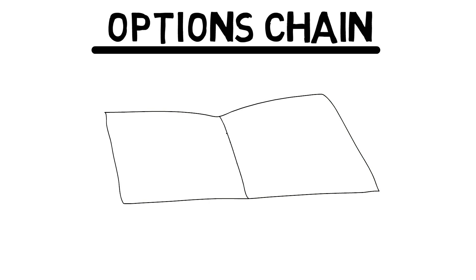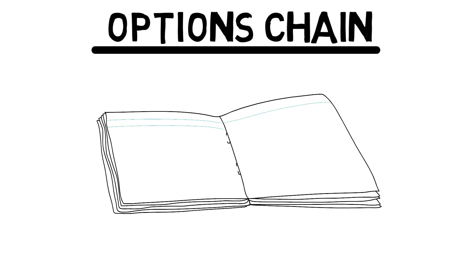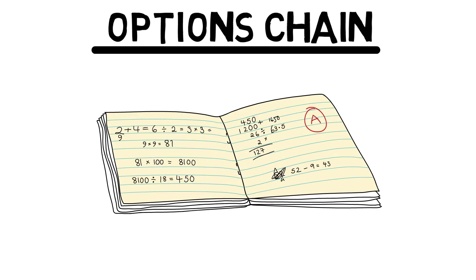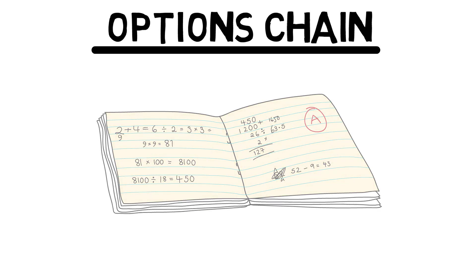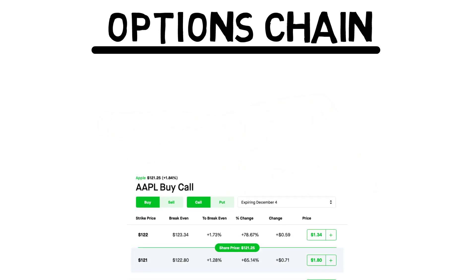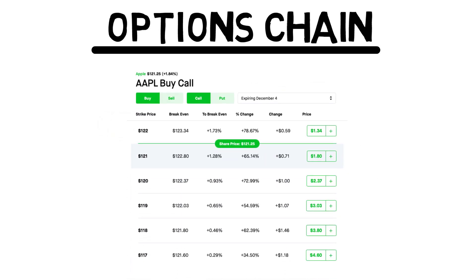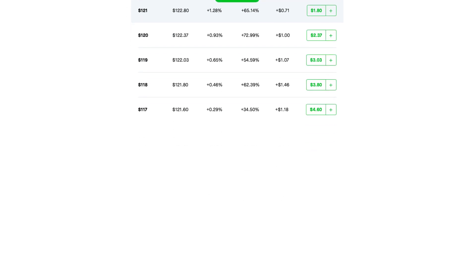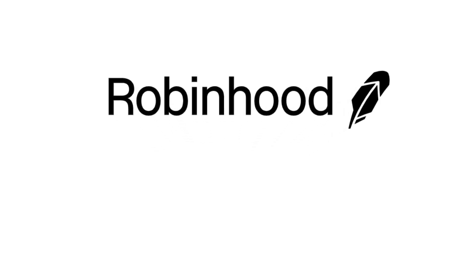Options have a language all their own, and when you begin to trade options, the information may seem overwhelming. When looking at an options chart, it first seems like rows of random numbers, but options chain charts provide valuable information that is absolutely necessary in order to begin trading. Learning the language of an option chain can help investors become more informed, which can make all the difference between making or losing money.